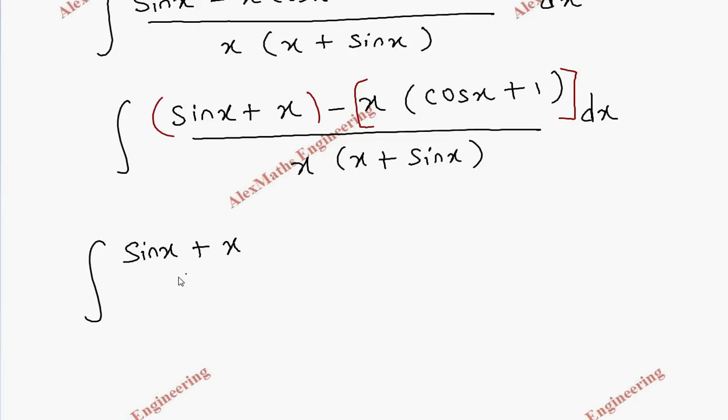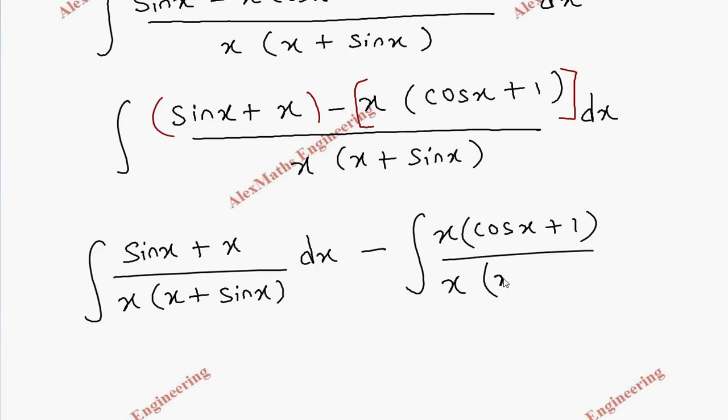Minus integral x cos x plus 1 divided by x into x plus sine x dx. So here we can cancel sine x plus x and here x plus x.